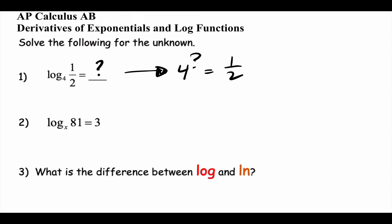Well, four is four over one, and one-half is a fraction, so I'm going to need to flip it — reciprocal — so you're going to need a negative. And then to go from four to two, that's a square root. So this is negative one-half. That's the power needed. A log just asks: what power do you need to get a certain answer?